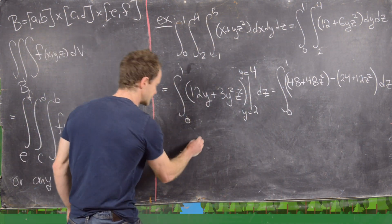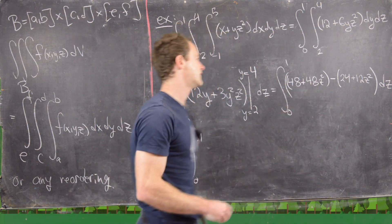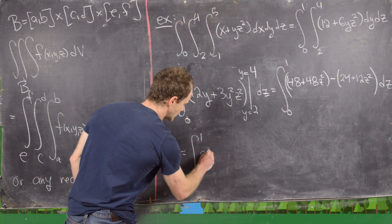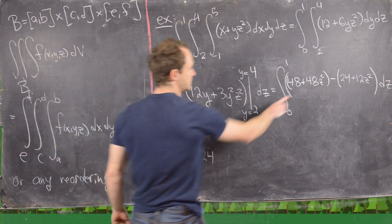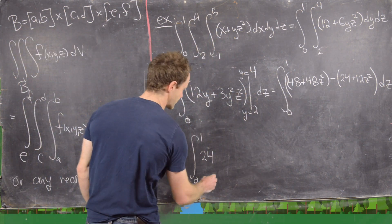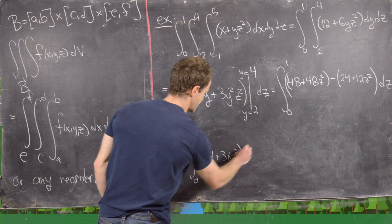Now notice that this is going to be the integral from 0 to 1. Now we can combine like terms. So we have 48 minus 24, which is 24. And then we have, this is going to be 48 minus 12, so that'll be 36. So 36z squared dz.